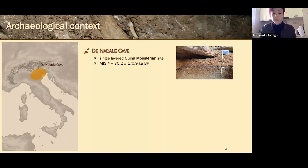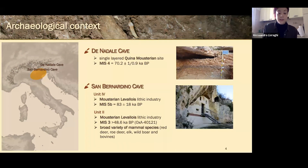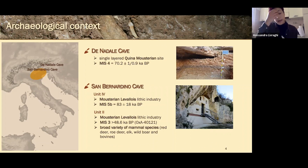I'll start with a brief overview of the three sites. The Nadale cave is a small single-layer Kina Mousterian site dated to the onset of MIS4. San Bernardino cave is located in the same area, and I sampled materials from two main layers: Unit 4, dated to MIS5b, and Unit 2, dated to MIS3. In these layers we see a broad variety of mammal species, especially with the predominance of red deer and roe deer.